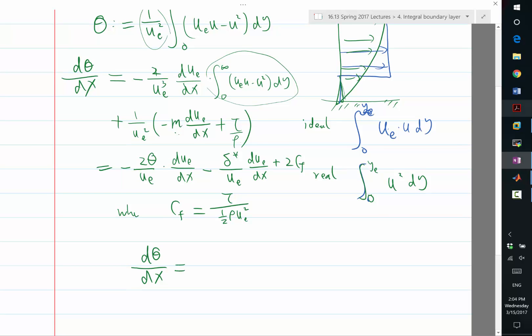So, I can combine them: 2θ plus delta star, divided by ue, due/dx plus 2cf. Okay, this is good.